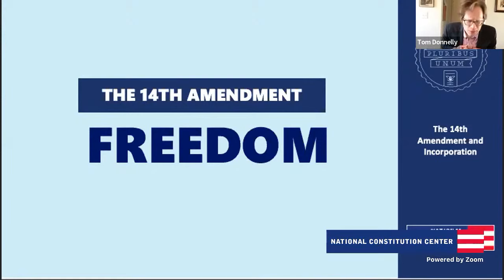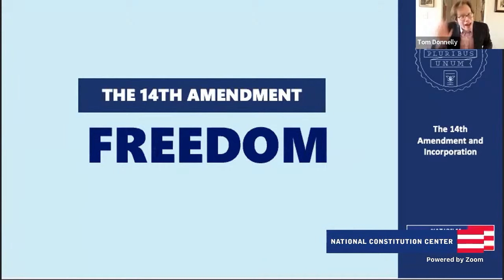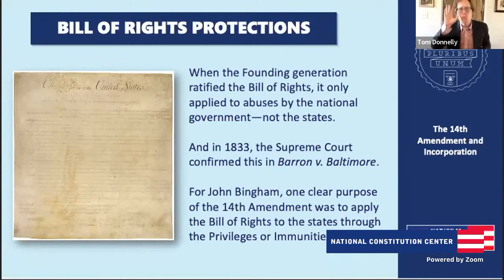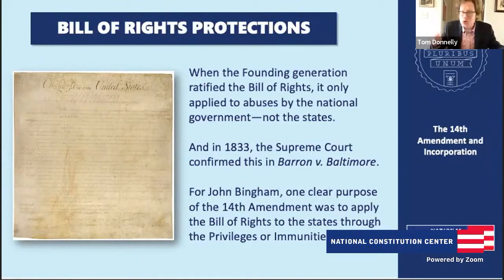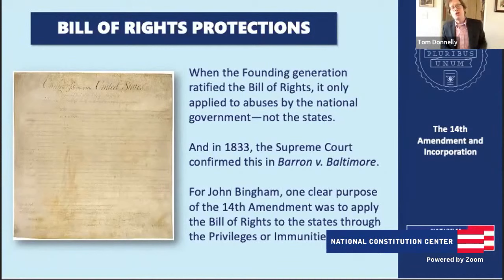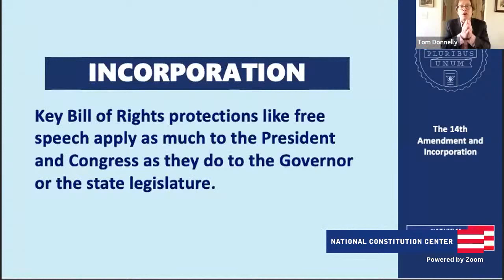In 1833, in Barron v. Baltimore, Chief Justice John Marshall confirmed that the Bill of Rights only applies if the national government abuses your rights — states are not touched by it. So if your home state punished you for criticizing your governor, the First Amendment wouldn't protect you before the 14th Amendment. Before the Civil War, many southern states abused key Bill of Rights protections — banning abolitionist speech, writing, and preaching throughout the South. For John Bingham and the Republican Party after the Civil War, part of their vision was to ensure the core protections of the Bill of Rights applied to state abuses, because one of the key lessons of the Civil War is that states can abuse rights too.